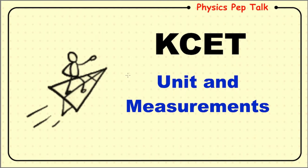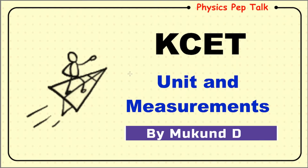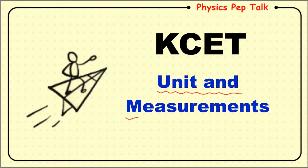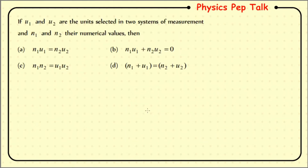Hello everyone, welcome to Physics Pep Talk. Let us continue solving multiple choice questions on units and measurements. Let us look into the first question: if u1 and u2 are the units selected in two systems of measurement, and n1 and n2 are their numerical values.